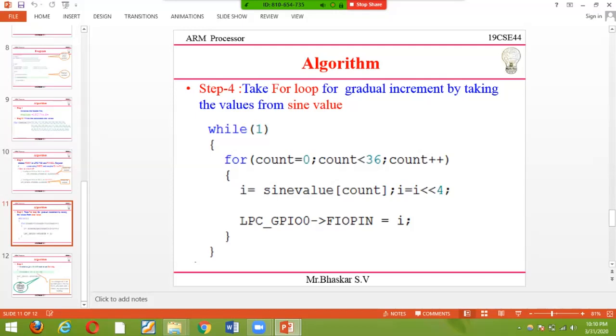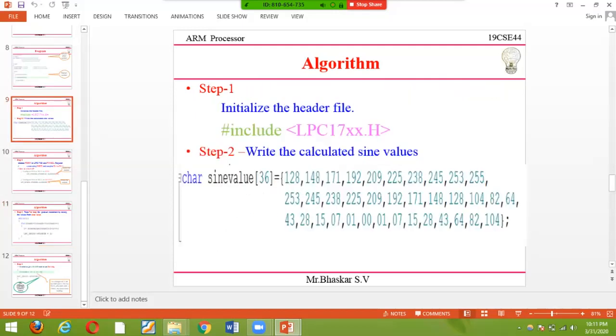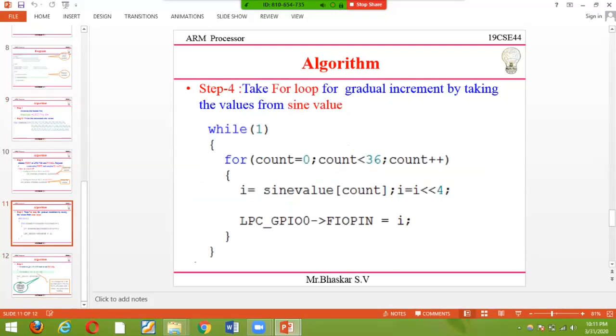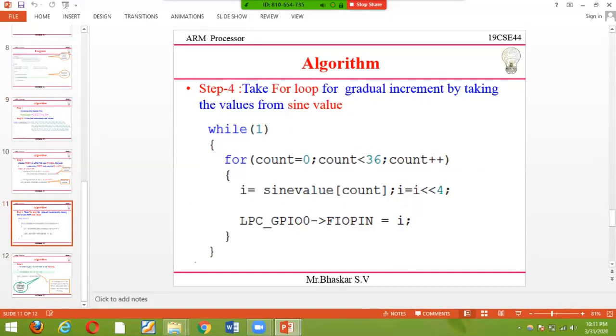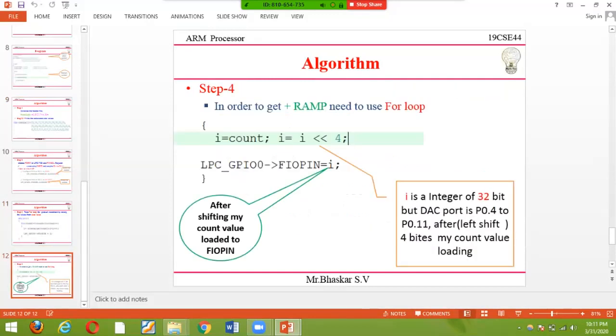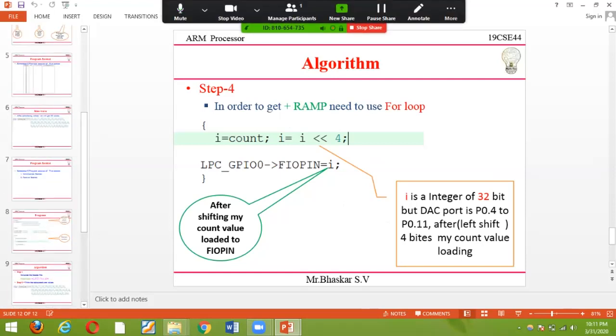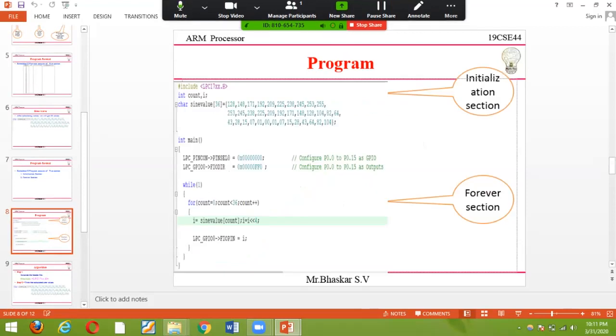Here I can't take count directly. The count value is 0 to 36 because I have 36 values. One after another, I'm going to apply them to my pin. To apply the high value, I load sine value of count into the pin. I'm loading sine value of count, then checking. After left shift of 4, as I told earlier, the 32-bit value loads the same way we discussed previously.